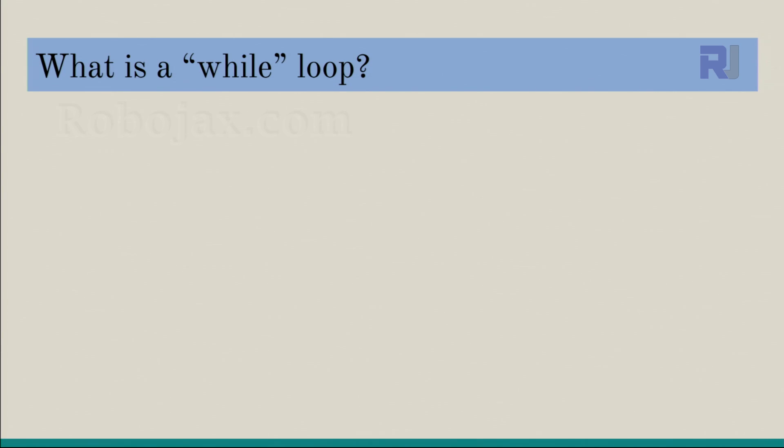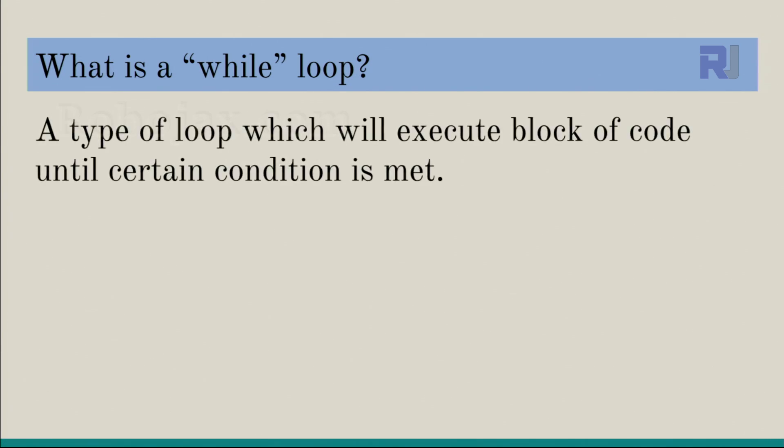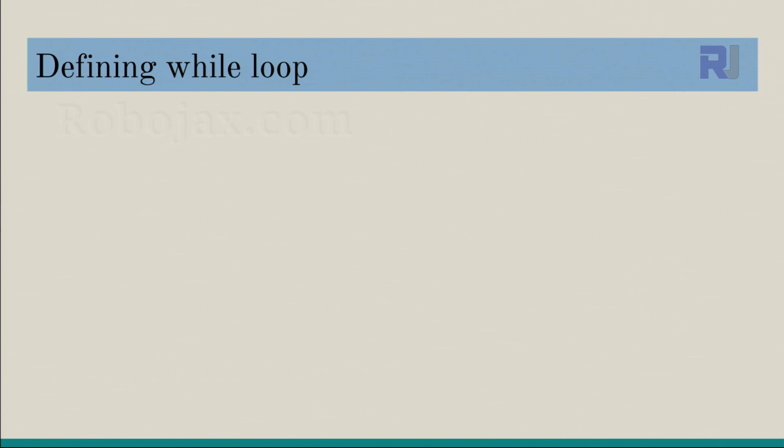So what is a while loop? A while loop is a type of loop which executes a block of code until a certain condition is met, and when the condition is met, the loop exits.